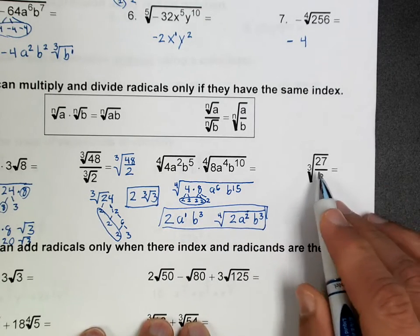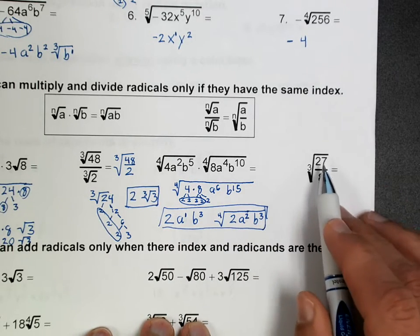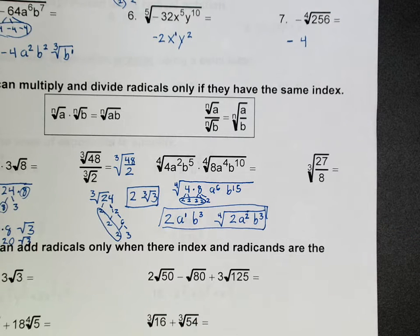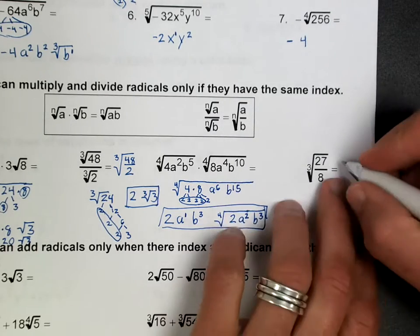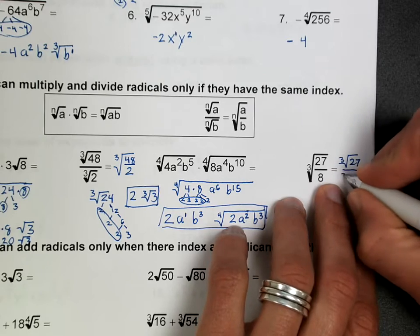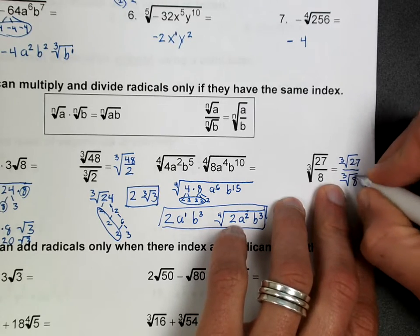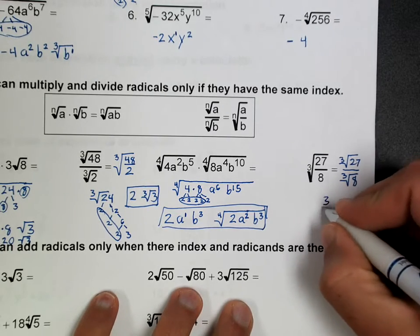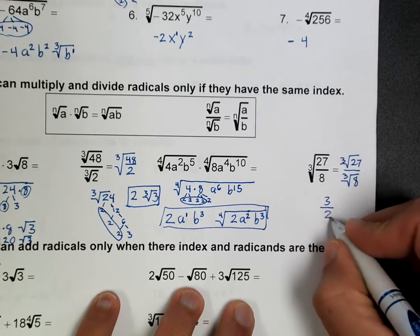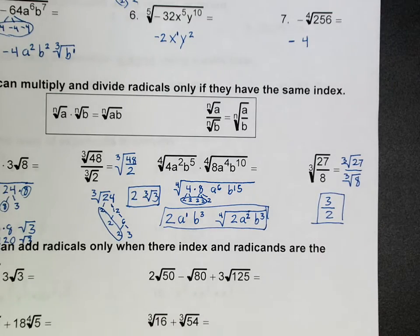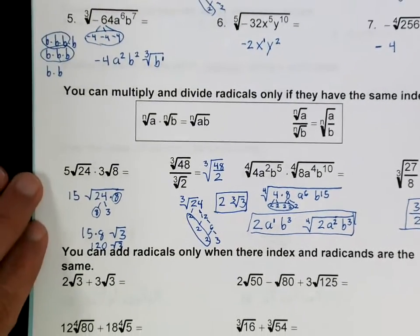Alright, on this one, you can try to divide that, but that's not going to be a whole number. So on this one, you can also go backwards. Sometimes it might be easier to split the radical, and you just have to use your discretion, because I know what the square root of 27 is, which is 3, and I know what the square root of 8 is, which is 2. So this is much easier if you do it like that.